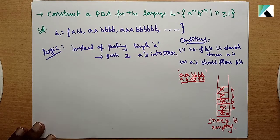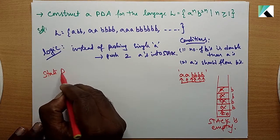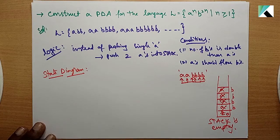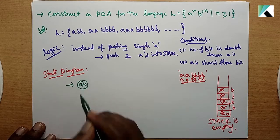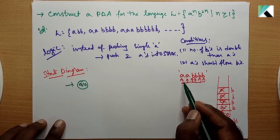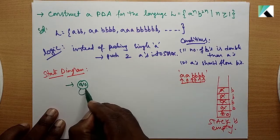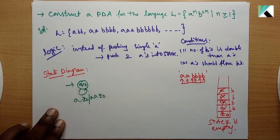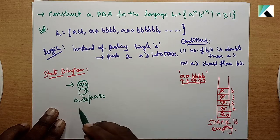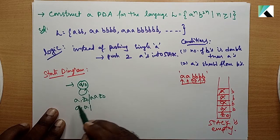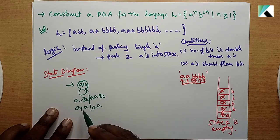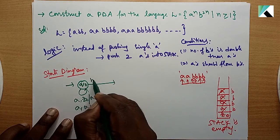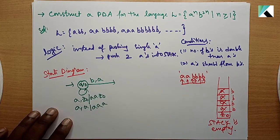Now for the state diagram. Initial state is q0. When you see a with z0 on the stack, push two a's. The state remains q0. For each a in the input with a on top of the stack, push two more a's and stay in q0.